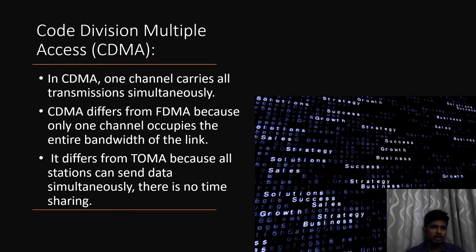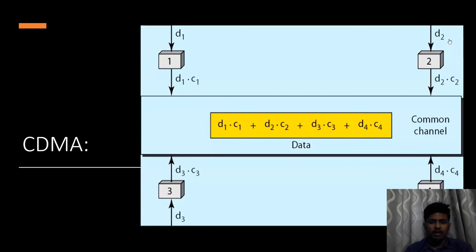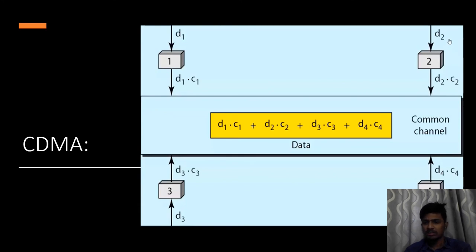In this example, there are four stations — Station 1, Station 2, Station 3, and Station 4. Station 1 generates D1 data, Station 2 generates D2, Station 3 generates D3, and Station 4 generates D4. Each station has a code: C1 for Station 1, C2 for Station 2, and so on. What Station 1 actually sends is C1·D1 along with its code; Station 2 sends C2·D2; Station 3 sends C3·D3; Station 4 sends C4·D4. On the common channel, all data — D1C1 + D2C2 + D3C3 + D4C4 — is combined and sent as a single signal. This is multiplexing: multiple signals converted into a single signal.